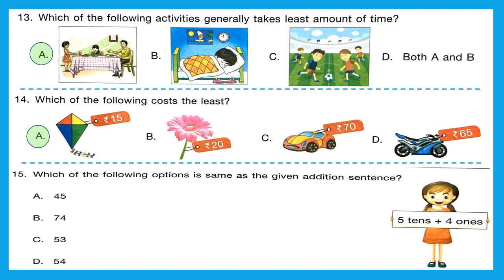Question 15: 'Which of the following options is the same as the given addition sentence?' The addition sentence says 5 tens plus 4 ones. We put 5 at the tens place and 4 at the ones place, and we get the number 54. The right option is D, 54.